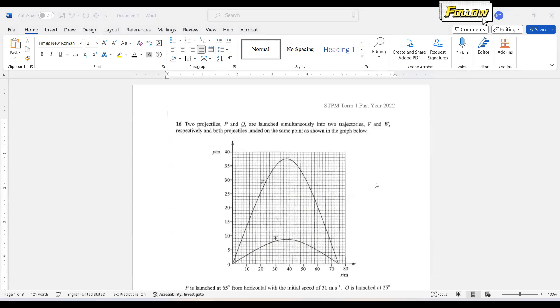Good day, we discuss the Teng-1 passage in 2022 section B. Two projectiles P and Q are launched simultaneously into two trajectories V and W respectively and both landed on the same point as shown in the graph.